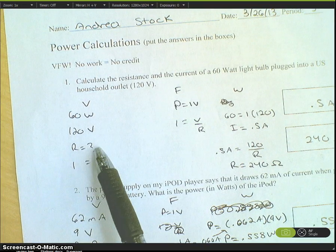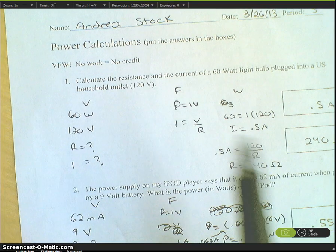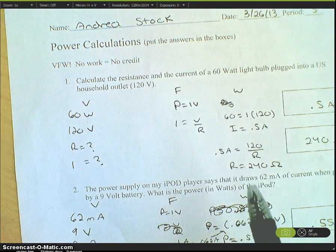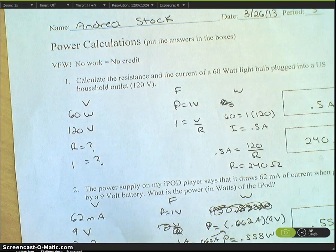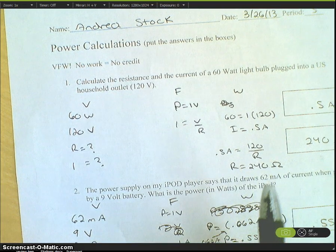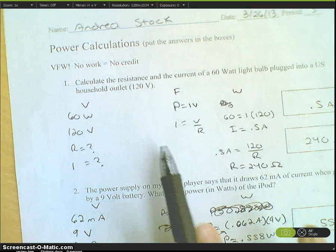I picked two formulas we can use. We can use P equals IV, which is power equals current times voltage, so we can find our current there. Then we can use current equals voltage over resistance to find our resistance.